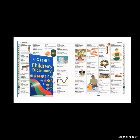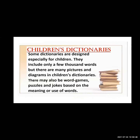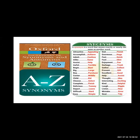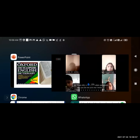So, we have seen children's dictionary, pronouncing dictionary, synonyms dictionary, visual dictionary, encyclopedic dictionary, and online dictionary available on the internet. These are the different types of dictionaries. All dictionaries help us know the meaning of difficult words.